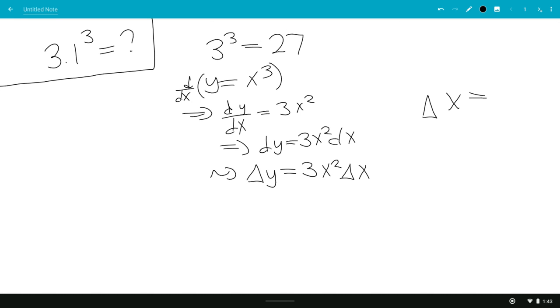And our Δx in this case would be 0.1, our x would be 3, leaving us with 3 times 3 squared is 9, times Δx 0.1.